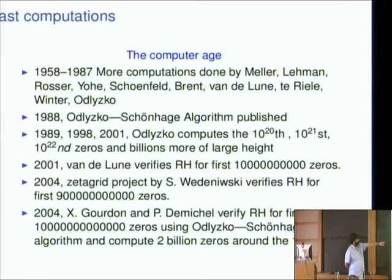And then from there, Odlizko computed the 10 to the 20th, 10 to the 21st, 10 to the 22nd zeros, and billions more. Van de Loon, I think this was probably just using the Riemann-Siegel formula, verified for a lot of zeros. I think that's 10 to the 10. There was a distributed computing project which stopped in 2004. This is 9 times 10 to the 12, I think. And then Gordon published a paper in 2004 saying he verified the Riemann hypothesis up to 10 to the 13 zeros. And he also computed the 10 to the 24th zero, and about 2 billion around there.